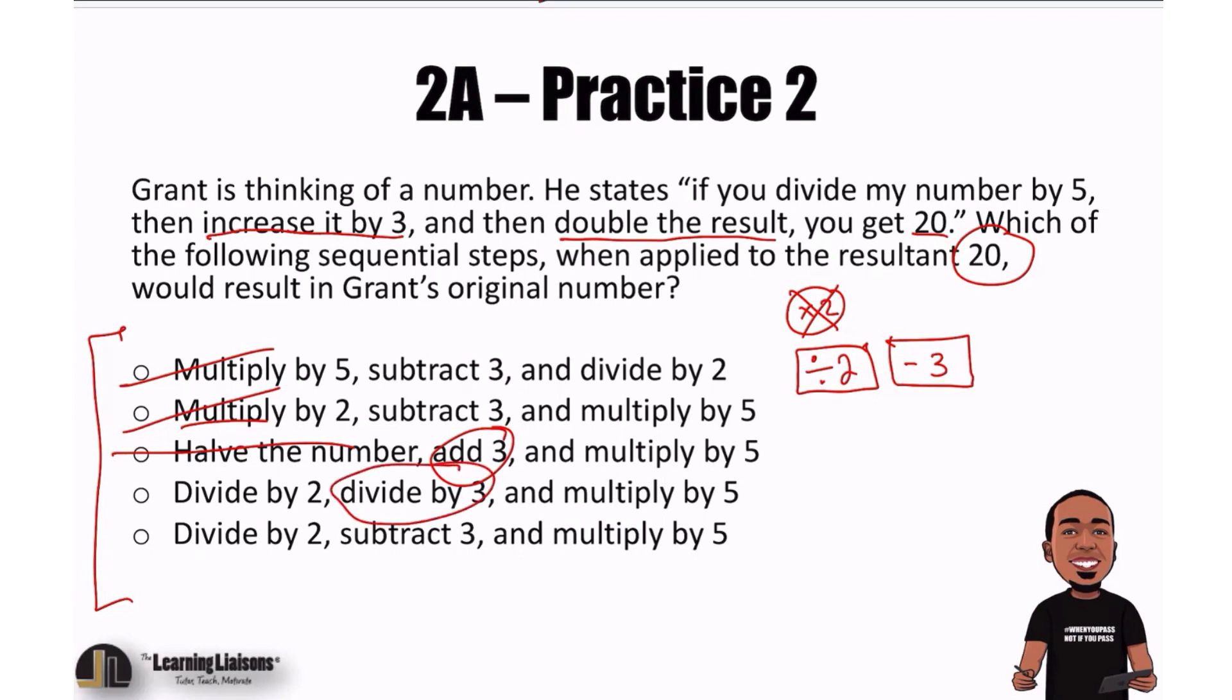This one has divide by 3, and the last choice is subtract 3. Then, the fourth option is gone. Our answer choice here is E, or the last choice.